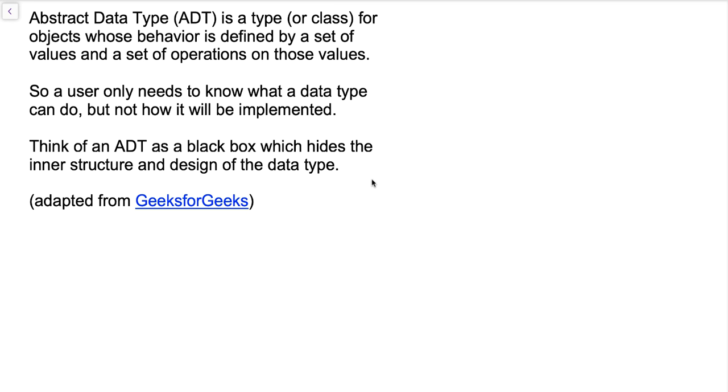Now, an abstract data type is a type or class for objects whose behavior is defined by a set of values and operations on those values. You might have heard me say the definition of a data type, not abstract data type, just data type is a set of values and a set of operations on those values. So an abstract data type, the only more specific part of this definition over a general data type is that it's for objects. So we don't really start thinking about abstract data types until we get to object-oriented programming where we can start implementing our own classes that implement an abstract data type.